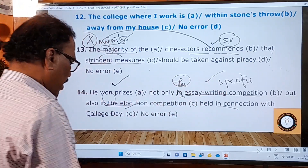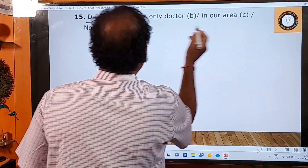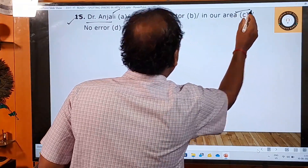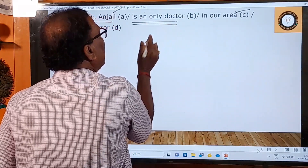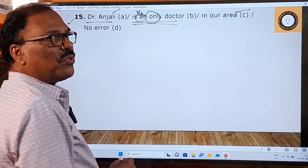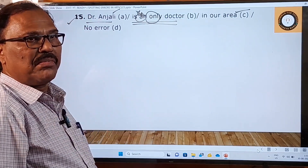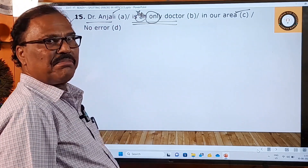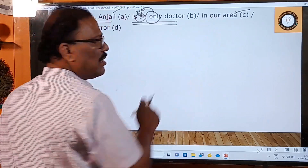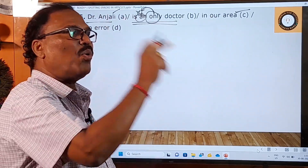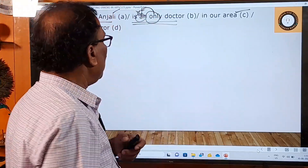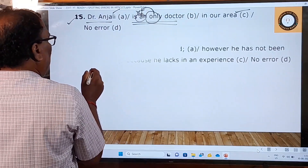Fifteenth sentence: 'Dr. Anjali is an only doctor in our area.' In the A and C parts there are no mistakes. But 'an only doctor' in the B part has an error. Whenever you use the word 'only', you must use the definite article 'the' before it. You cannot say 'a only doctor' or 'an only doctor'. You must say 'the only doctor'. So: 'Dr. Anjali is the only doctor', 'he is the only teacher', 'he is the only political leader' — before 'only' we must always use 'the'.